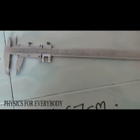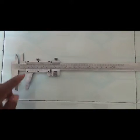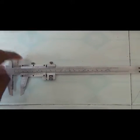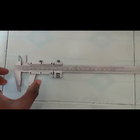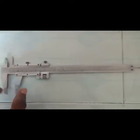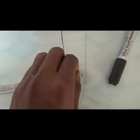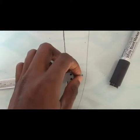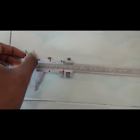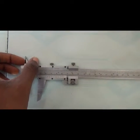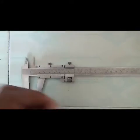We can use the vernier caliper to measure the internal diameter of an object, and these are the jaws we use for the internal diameter. We use this for external diameter, this for length, this for depth, inner depth of a hollow object, and this for the internal diameter of a hollow object.